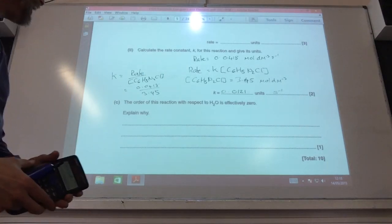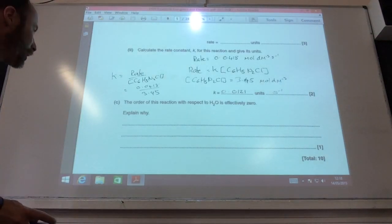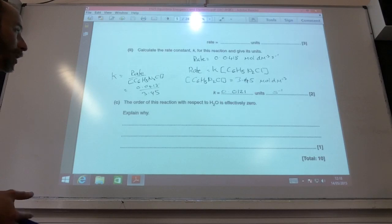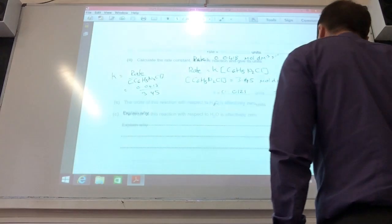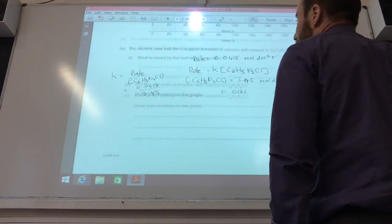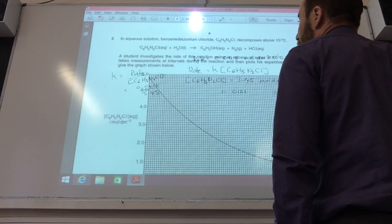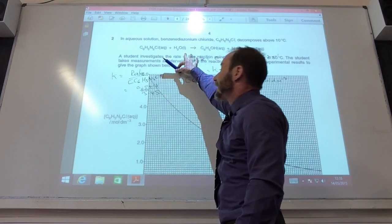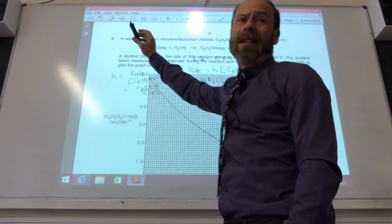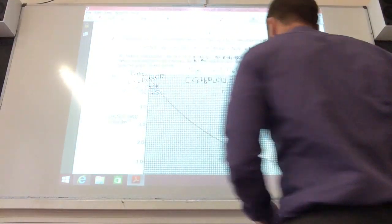A little bit of a cheeky question. At the end, the order of this reaction with respect to water is effectively zero. Why? Well, if we go back to the equation, the whole reaction is done in water. This is all in aqueous solution. So we're going to have loads of water present here. It's in excess. So the reason is because water is in excess.